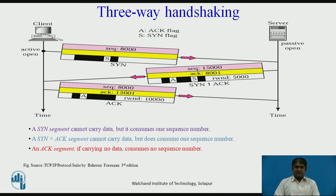The steps in this phase are: First, the client sends the first segment — a SYN segment — in which only the SYN flag is set. This segment is for synchronization of sequence numbers. The client chooses a random number as the first sequence number and sends this number to the server. This sequence number is called the initial sequence number, ISN. Note that this segment does not contain any acknowledgement number and does not define the window size. This SYN segment is a control segment and carries no data; however, it consumes one sequence number. When data transfer starts, the ISN is incremented by one.